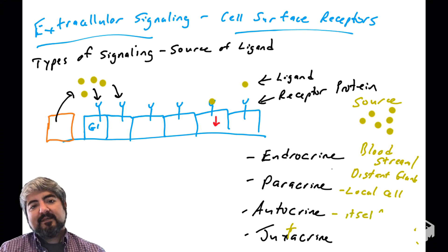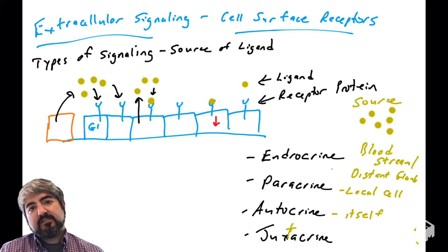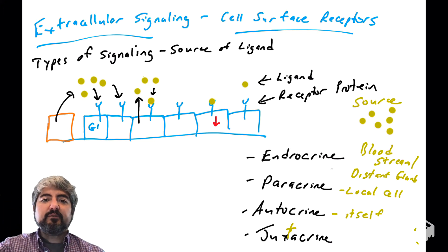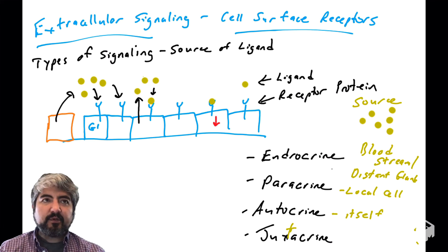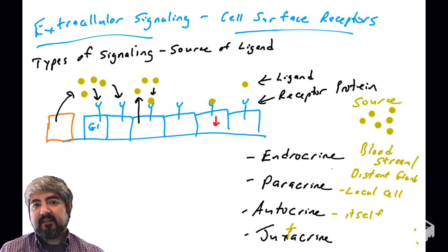Autocrine signaling — cells can release their own signaling molecules. So cells can tell themselves what to do by releasing these molecules and having those molecules come back and bind to receptors on their own surface. In autocrine signaling, the source and the target are the same cell — cells telling themselves what to do.